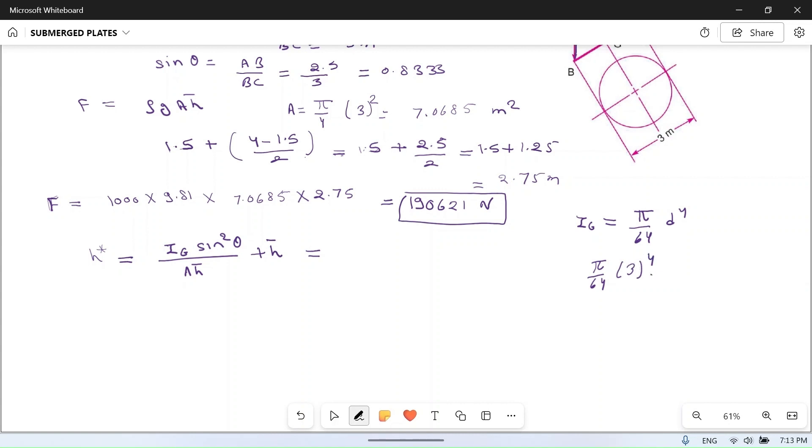If you calculate it, you will get 3.976 meter to the power 4. Now if you put all the values here, h star will become Ig, which is 3.976, into sin theta we have already calculated, 0.8333, this square.